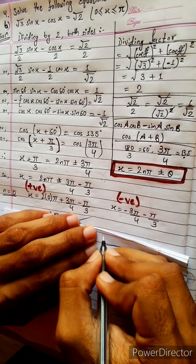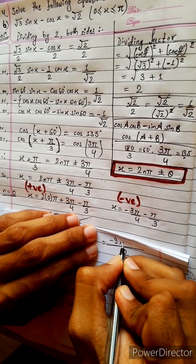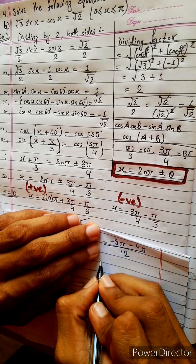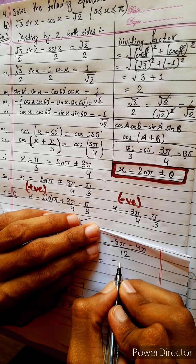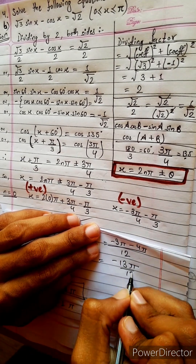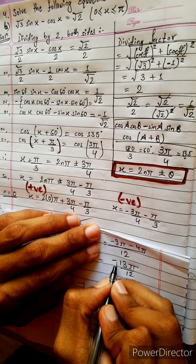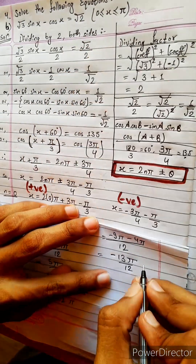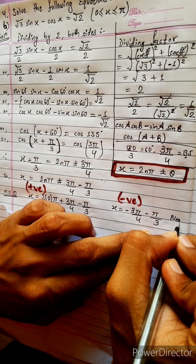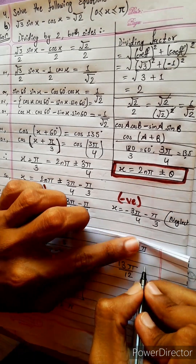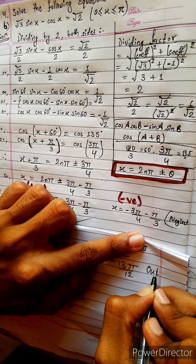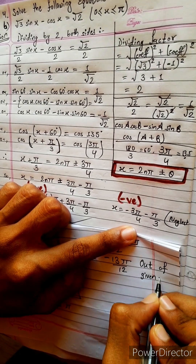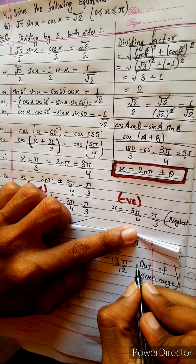Let's check the negative side also: minus 3π by 4 minus π by 3. LCM 12: minus 9π minus 4π, which gives minus 13π by 12. It is negative — negative means less than 0. We need greater than 0, so neglect. Out of given range.